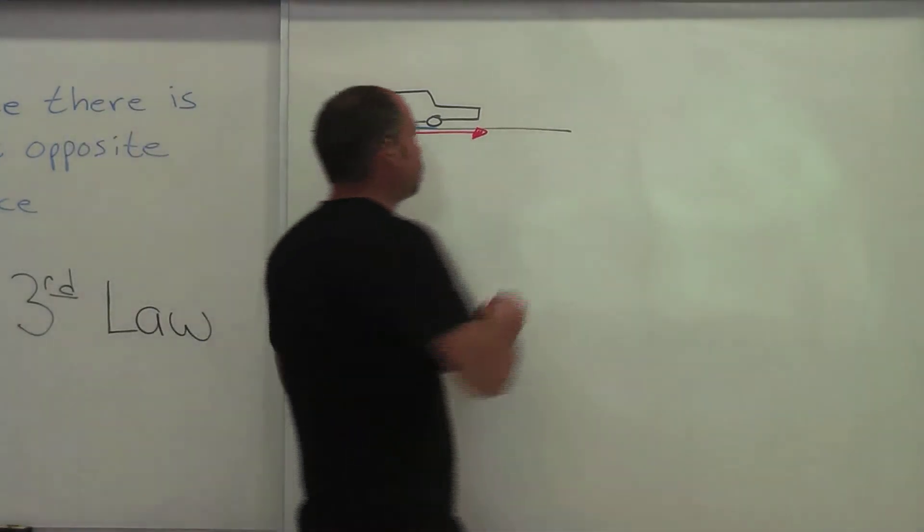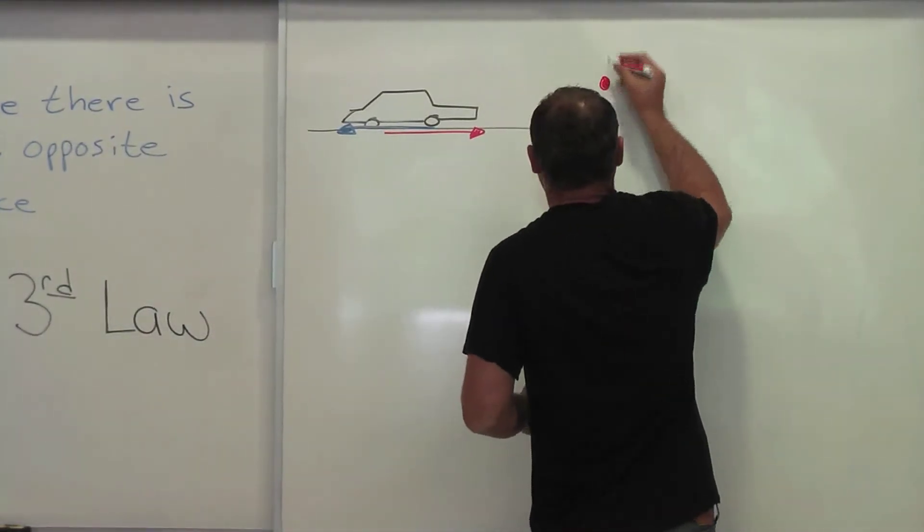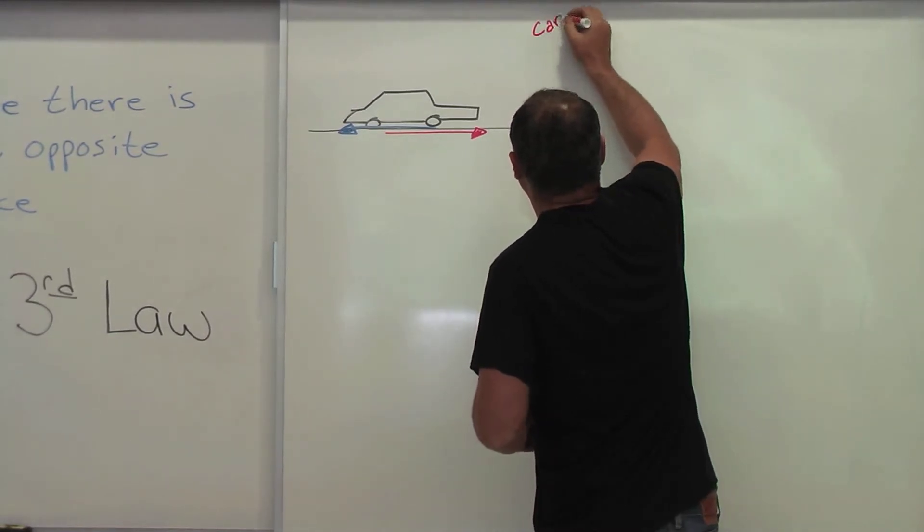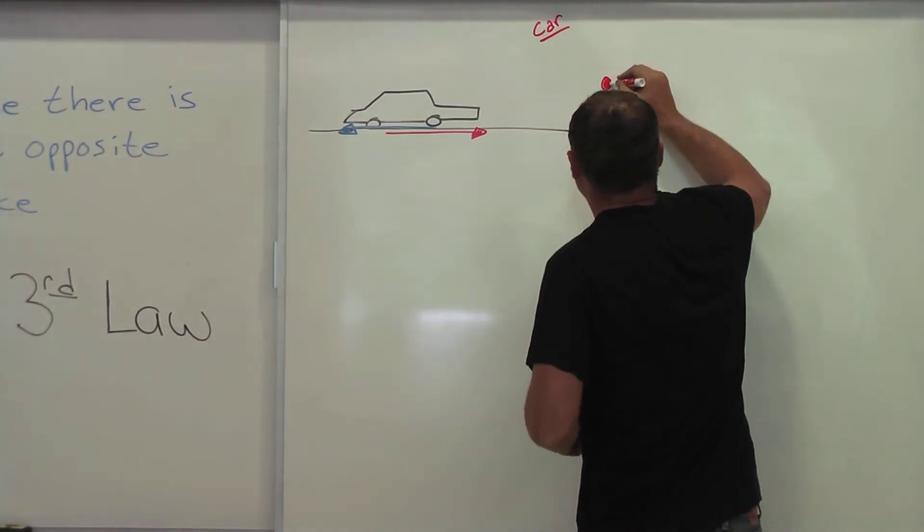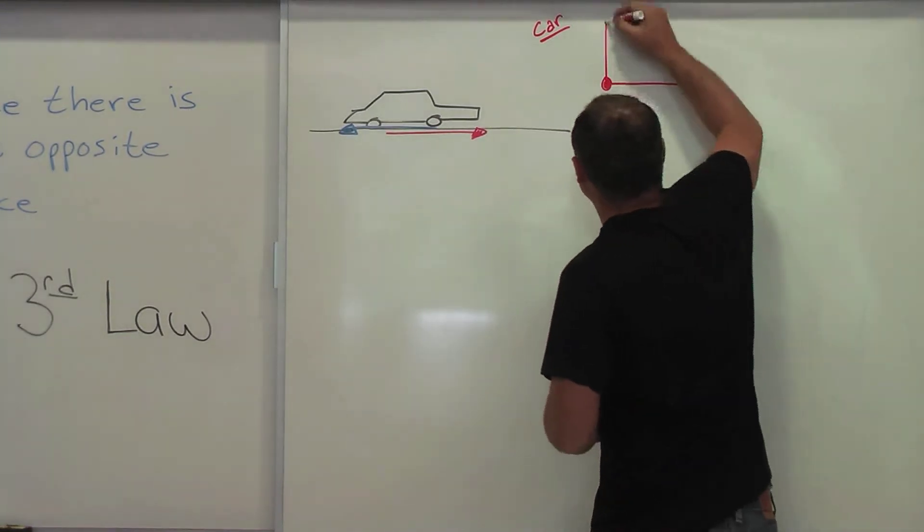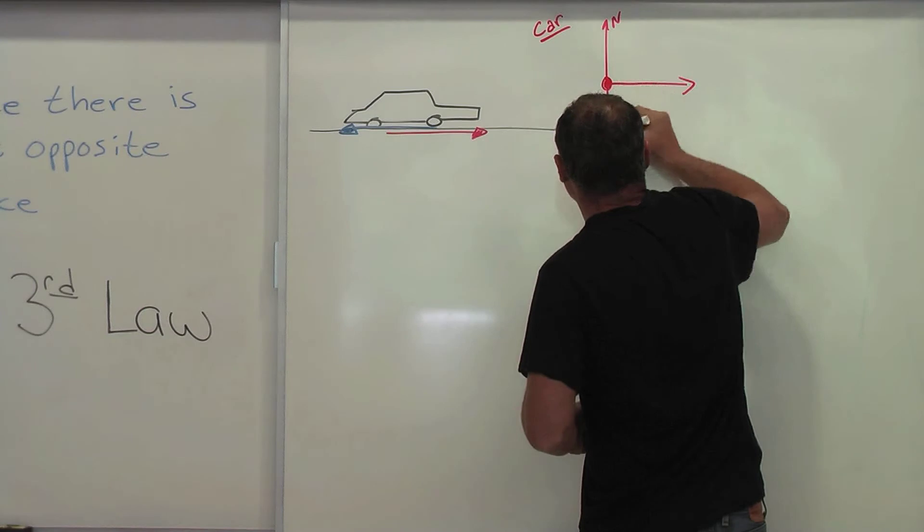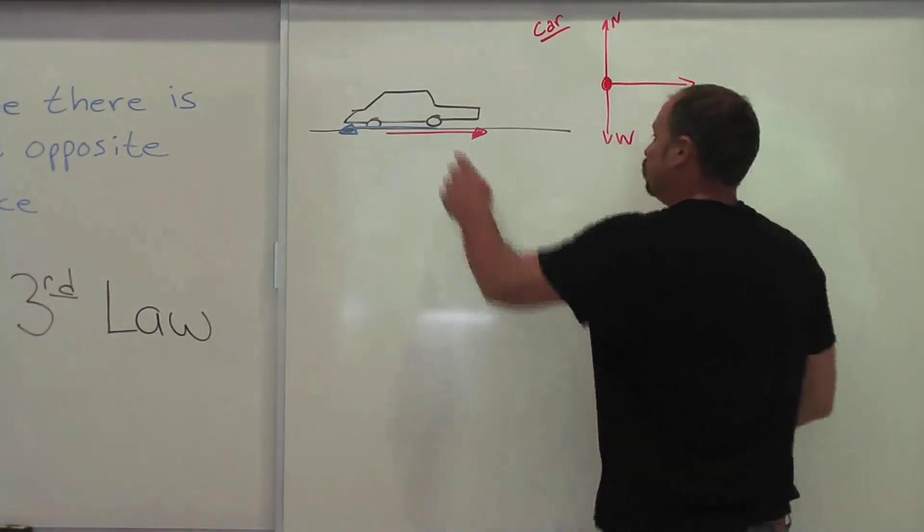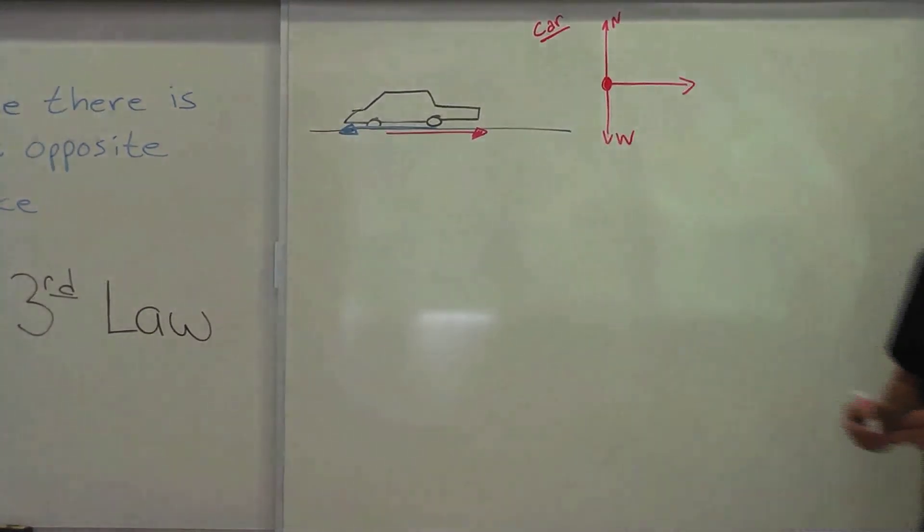So when you draw the free body diagram for the car, you have the reaction force, that is the ground pushing on the car this way, and then of course you have the normal force and the weight, but you do not include the force on the earth.